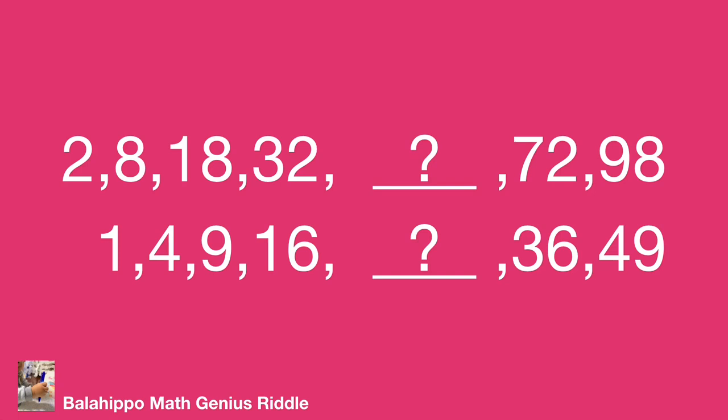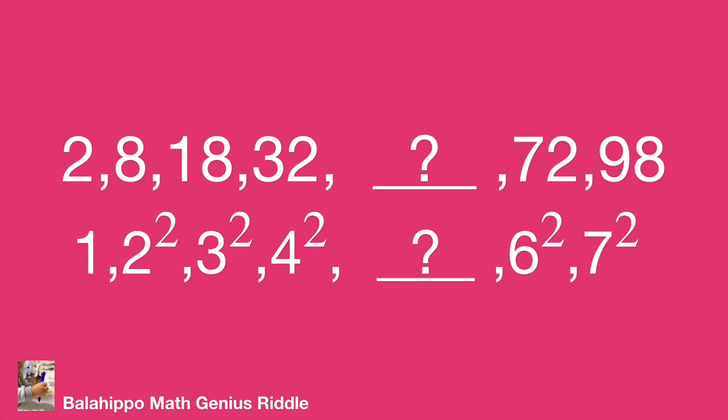You can easily find the new number series. All of them are square numbers. They equal 1 squared, 2 squared, 3 squared, 4 squared, the missing number, 6 squared, and 7 squared.